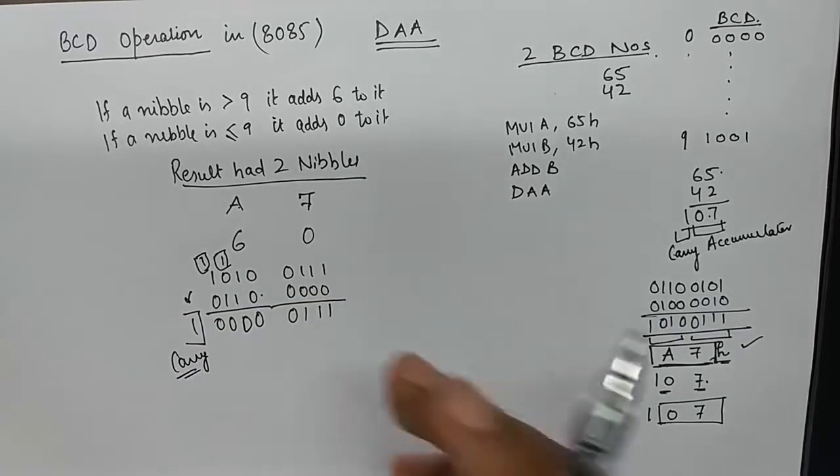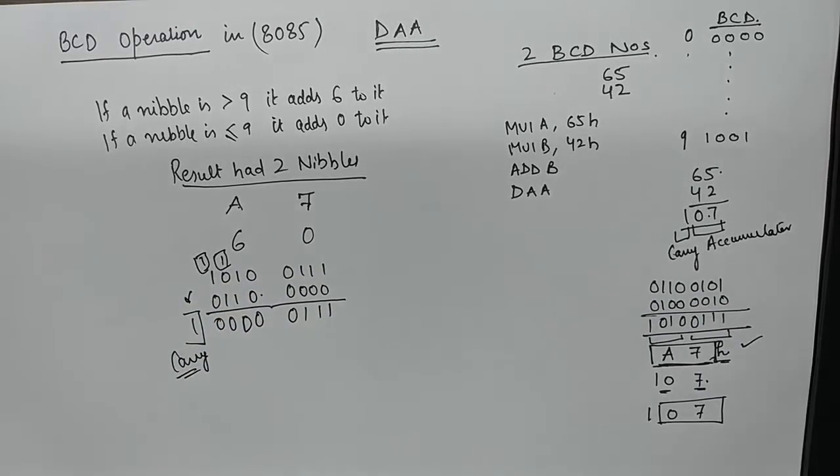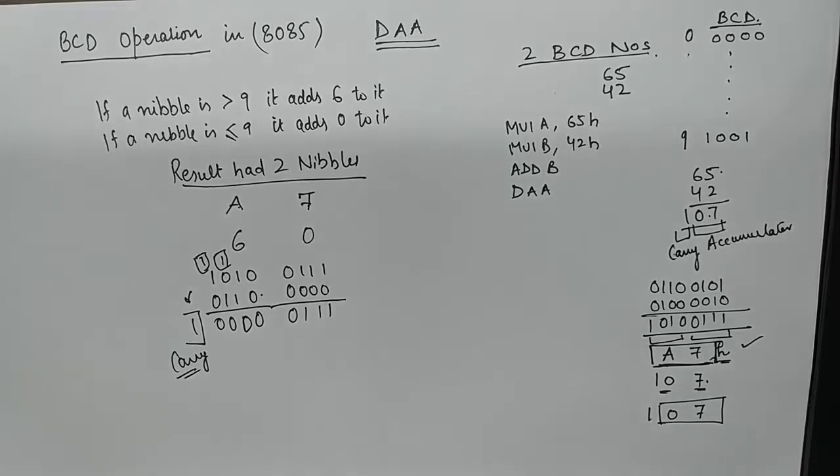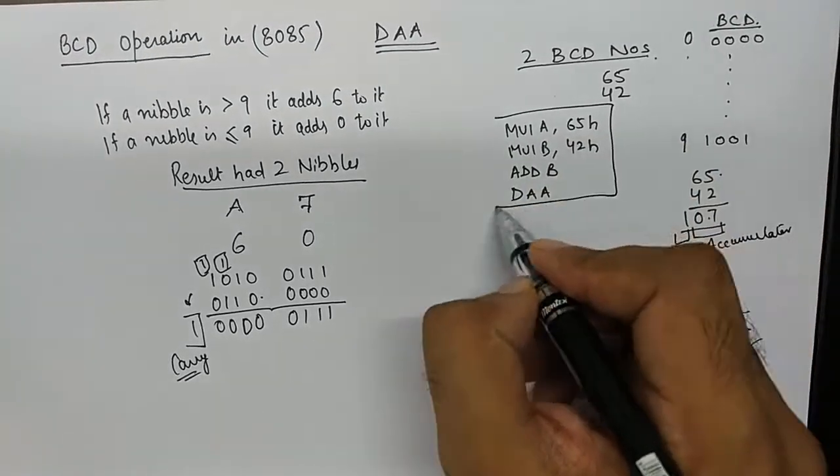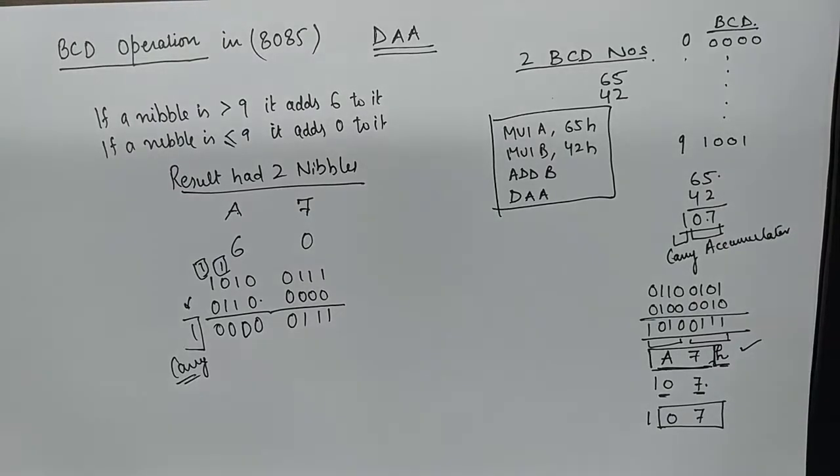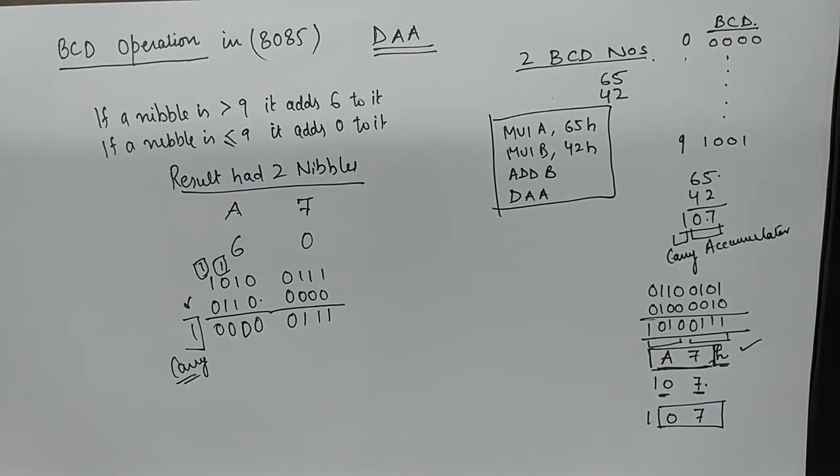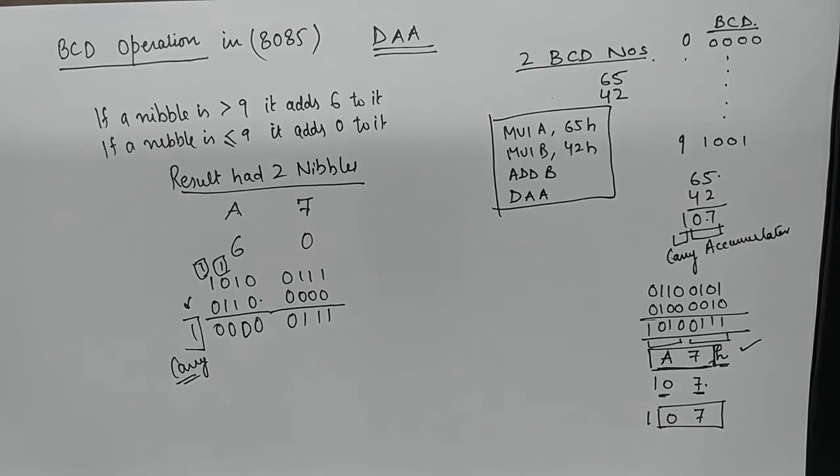As you can see, by doing this small trick - if a nibble is greater than 9 we add 6 to it, if a nibble is less than or equal to 9 we add 0 to it - we get the correct notation, correct format for BCD. This is what DAA does automatically in the background. You do not even need to think about it or worry about it. DAA does it automatically. You simply need to add two valid BCD numbers. If the result is a BCD number with correct notation it will add 00 to it. If it is not correct, it will add 6 to the nibble which is greater than 9.